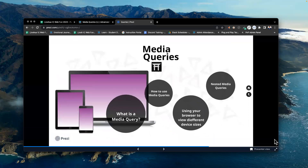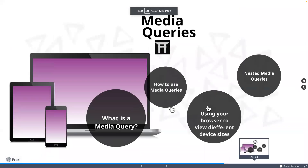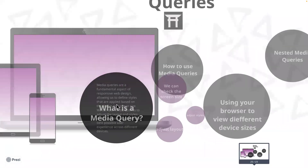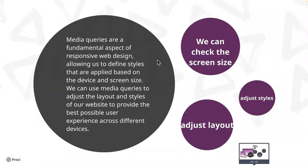Let's go through this slide — if there are any typos, forgive me, I typed it up last minute. A media query is a fundamental aspect of responsive web design. It allows us to define styles that are applied to different screens. How does your website look on mobile versus an iPad or a desktop monitor? How do you create a website that adapts to the screen size? Do we cater more to the desktop view or to the mobile view?